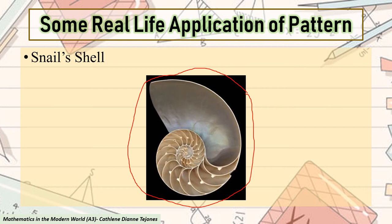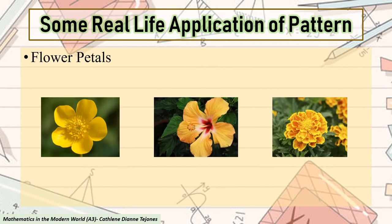Another example: we also have flower petals. Flowers with five petals are said to be the most common. These include buttercups, the columbine and hibiscus. Or, it is commonly named as gumamela here in our place. Among these flowers with eight petals are clematis and delphinium, and marigold with thirteen petals.